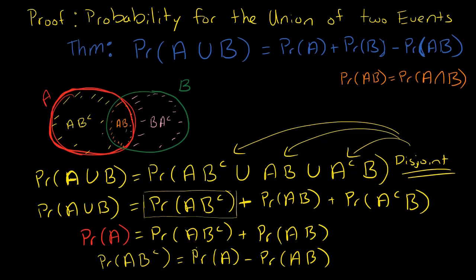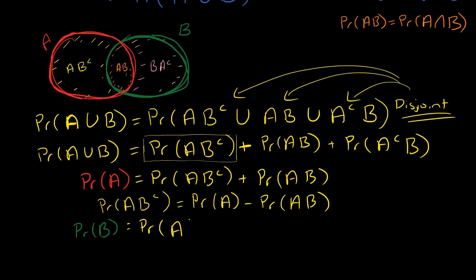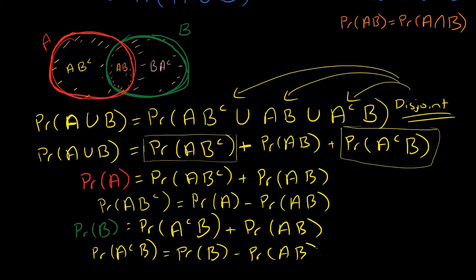Next, let's find the probability of B. The probability of B equals the probability of A^c∩B — the pink piece — plus the probability of AB. If I solve for the probability of A^c∩B by rearranging, I get: probability of A^c∩B equals the probability of B minus the probability of AB.